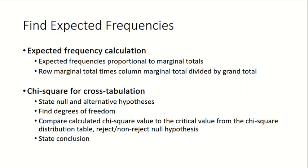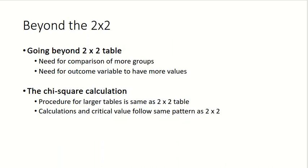Our expected frequency calculation is proportional to margin totals. Row margin totals times column margin totals divided by the grand total gives us an expected value for each cell in the crosstab. For the chi-square test for a crosstab, we state the null and alternative hypotheses, find the degrees of freedom, compare the calculated value to the critical value from the table, and then either reject or fail to reject the null hypothesis. Then we state our conclusion in plain language.